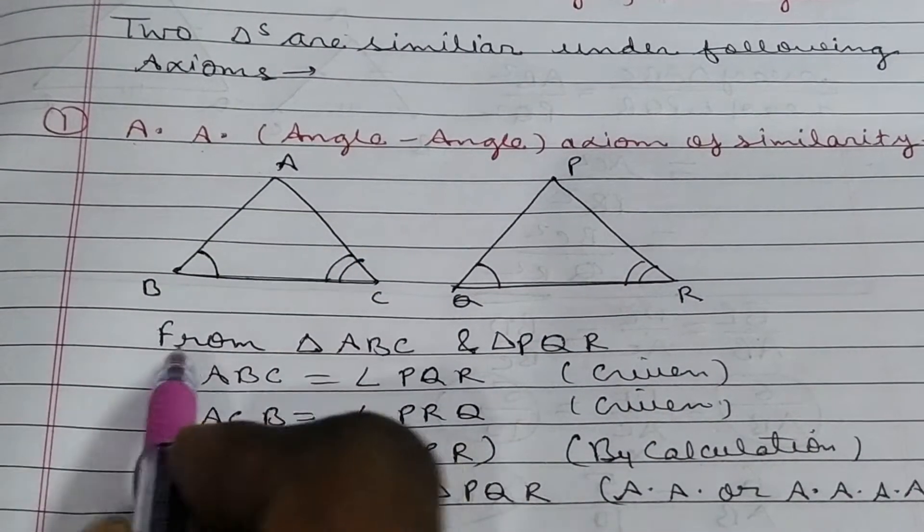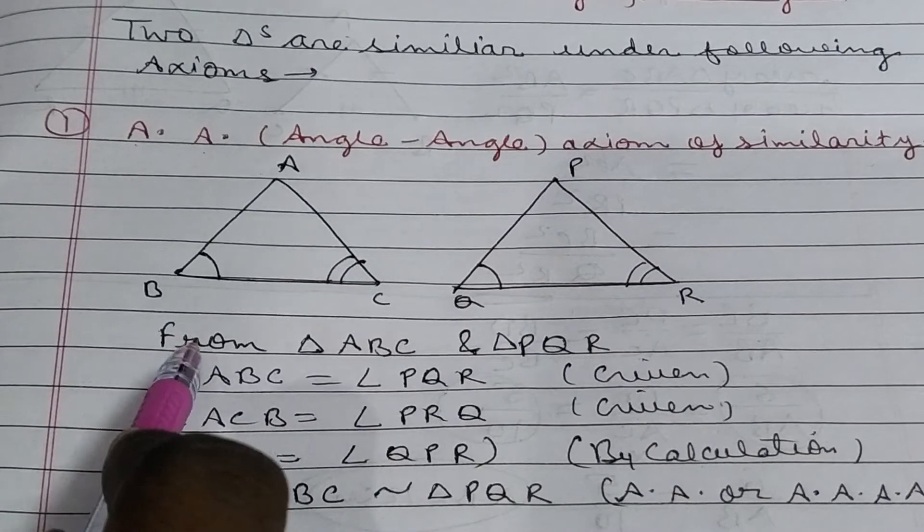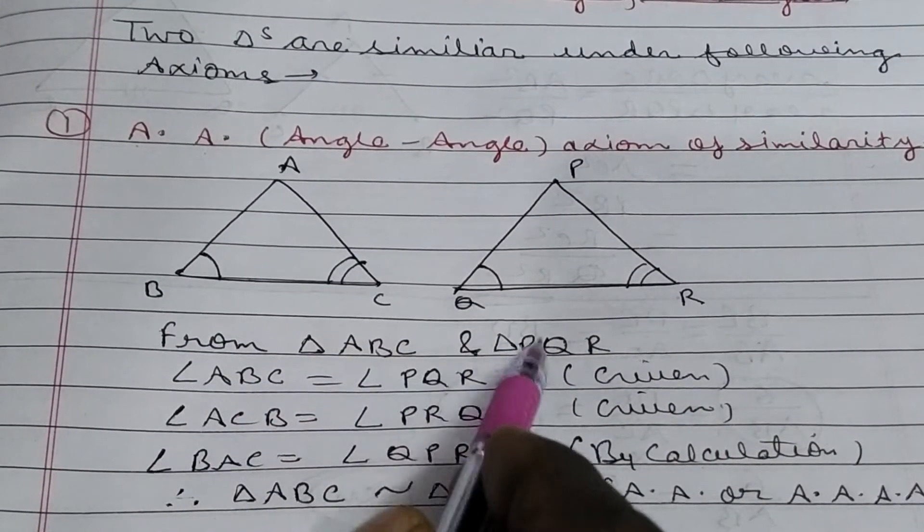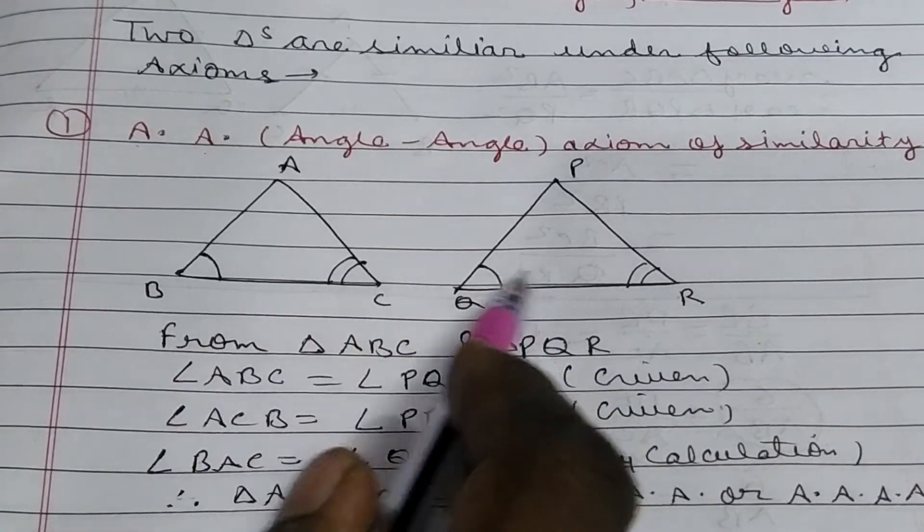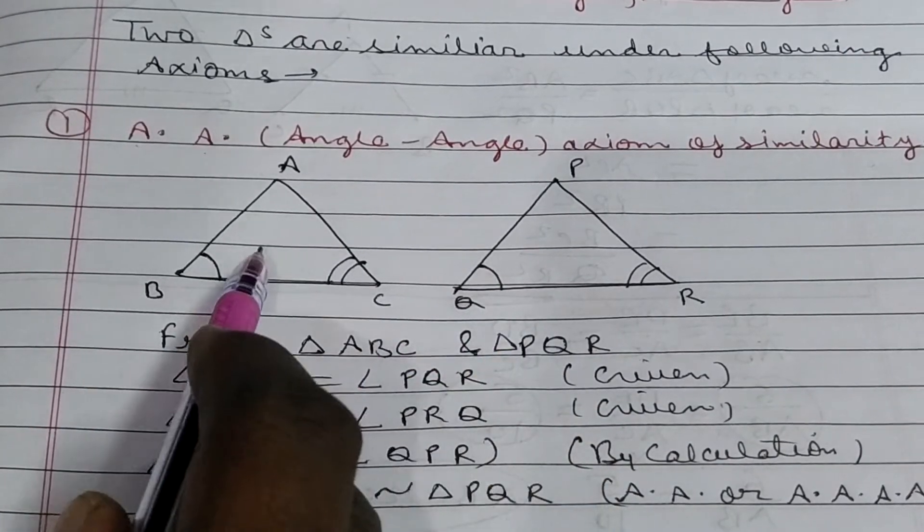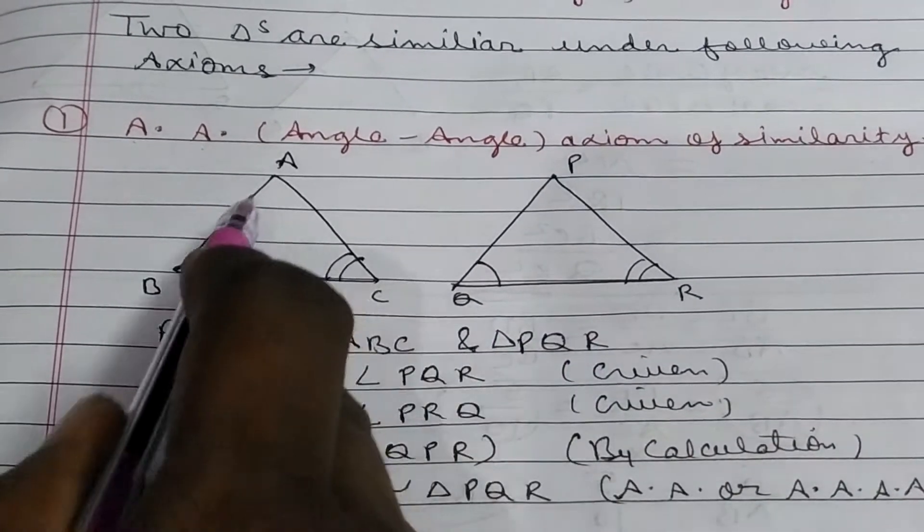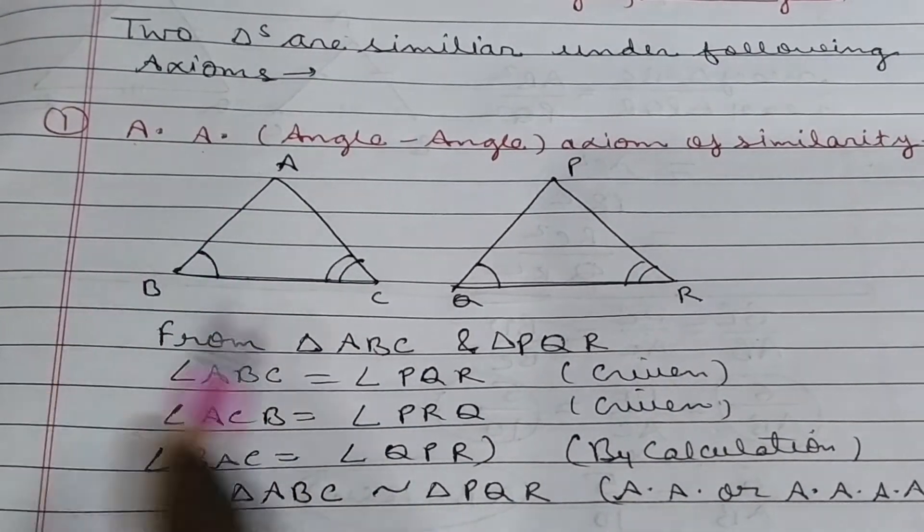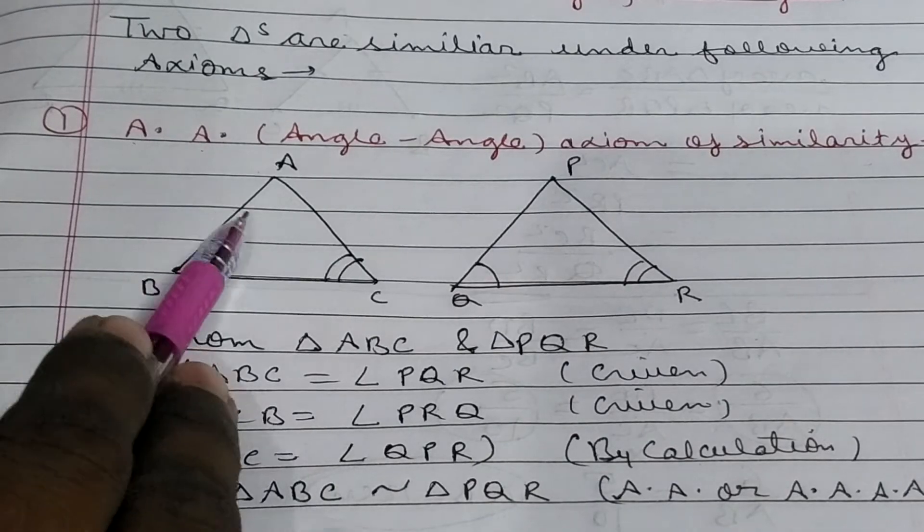Here you can see that angle ABC. How will you write it as? First, you will write down the triangle. Which two triangles you are taking? From triangle ABC and triangle PQR. In first line, you will write the triangle name. And then, the properties which are equal. Like, in case of angle. Inside, it will be proportional.